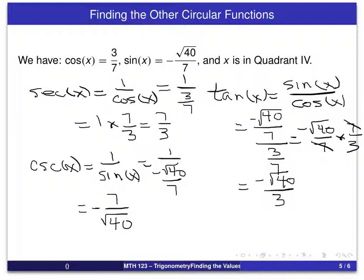And of course, the last one, which we'll try to fit in the corner here, is cotangent. And again, we use that reciprocal relationship. And again, what we will get is just the reciprocal of that fraction and we'll get minus 3 over the square root of 40. So we now have all six values for the circular functions in this case.